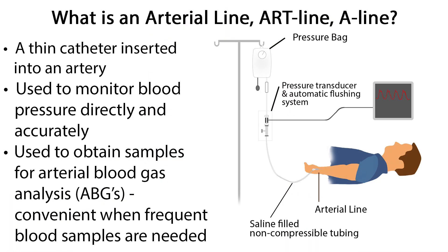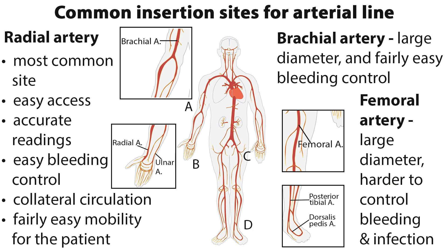Welcome to this video tutorial on the nursing care of arterial lines. An arterial line, also known as an art line or A-line, is a thin catheter inserted into an artery. It is most commonly used to monitor blood pressure directly and accurately, and with close titration of blood pressure medications. It is also used to obtain samples for arterial blood gas analysis, or ABGs, and is convenient when frequent blood samples are needed.